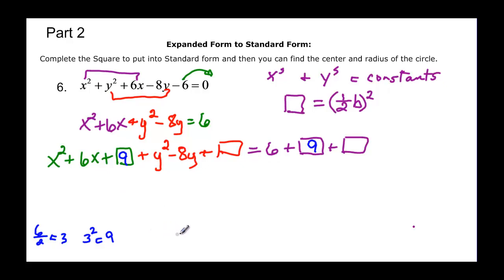And then we have negative 8 divided by 2, which is equal to negative 4, and negative 4 squared is equal to 16, and that's what we're going to add to both sides.